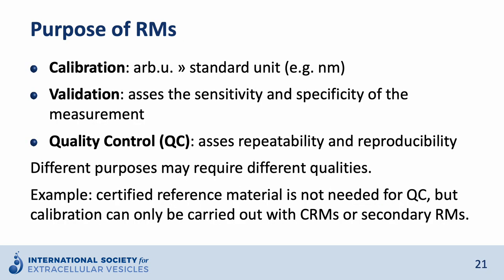Reference materials can serve different purposes. One purpose is calibration, converting measurement results from arbitrary units to standard units. Another purpose is validation, which means the assessment of the sensitivity and specificity of the measurement. A further purpose is quality control of an instrument or measurement assay, meaning the assessment of repeatability and reproducibility over time. It is important that different purposes may require different qualities — for example, a certified reference material is not needed for daily quality control, but calibration of an instrument can only be carried out with a certified or secondary reference material.